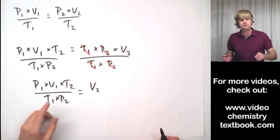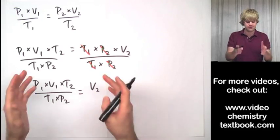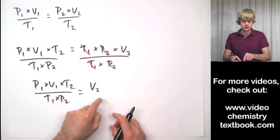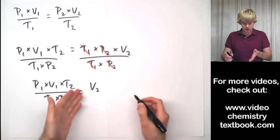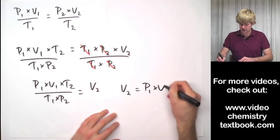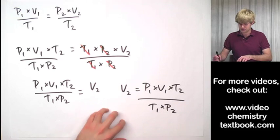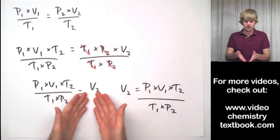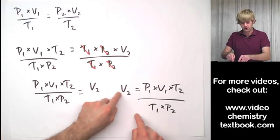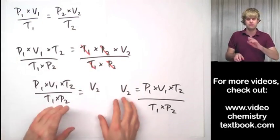Sometimes people feel uncomfortable when we have the thing we're solving for on the right-hand side, because we're used to saying V2 equals this. You know what? It's totally fine. You can flip it. If you prefer, we can just write V2 equals P1 times V1 times T2 divided by T1 times P2. Never worry if you've gotten the variable all by itself on one side but it just happens to be the right side. Just flip it around if you'd rather have the variable you're solving for be on the left. So those are the two examples where we use this cross multiplication method for the shortcut.